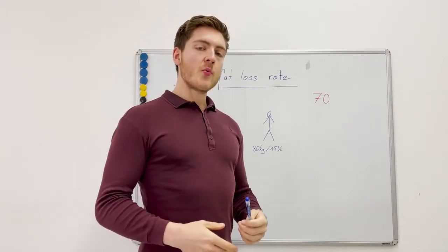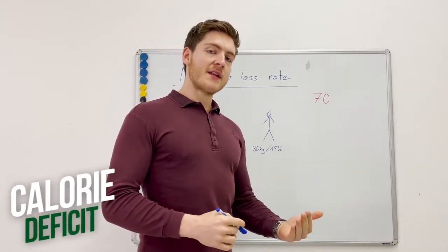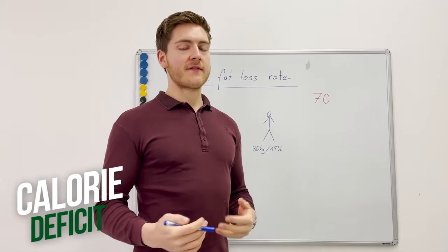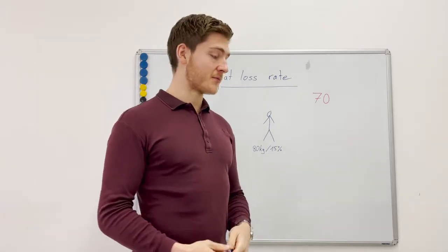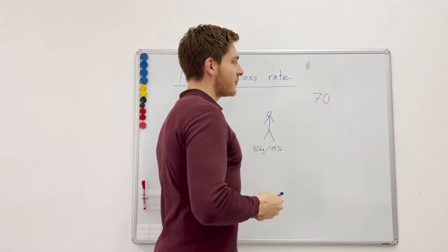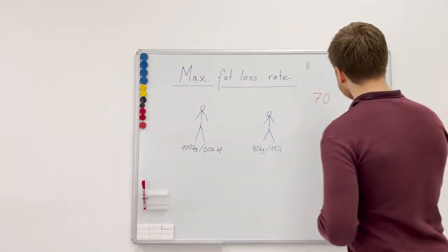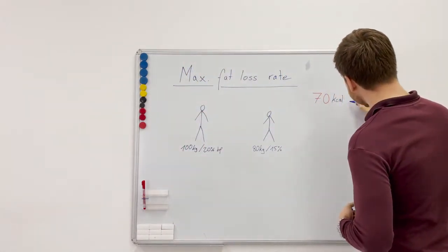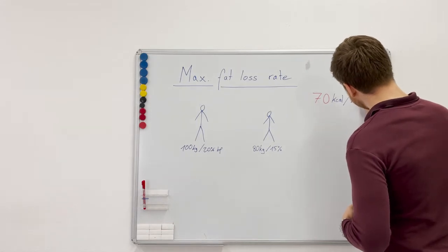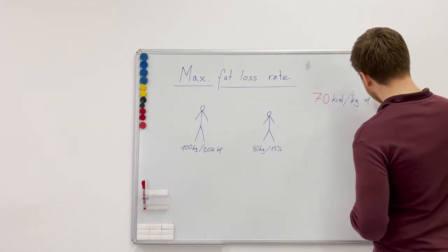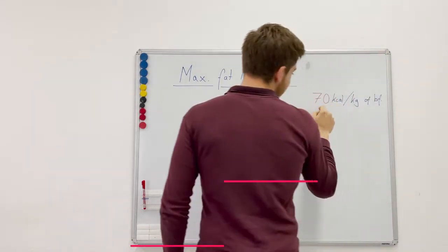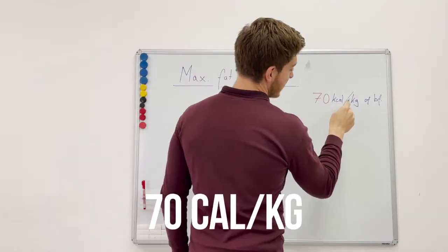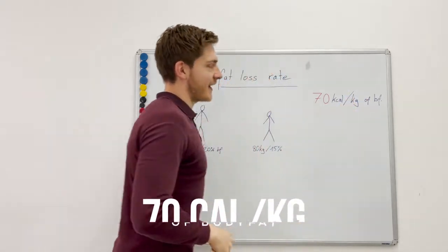We know we need to go into a calorie deficit in order to lose body fat. We need to consume less calories than we're burning, but there's a maximum. This maximum is actually 70 calories per kilogram of body fat. I'm taking here the short version: 70 calories per kilogram of body fat.